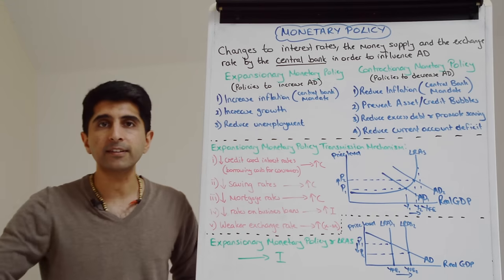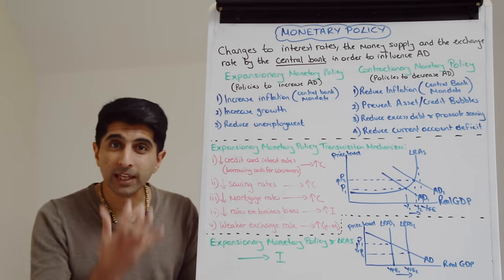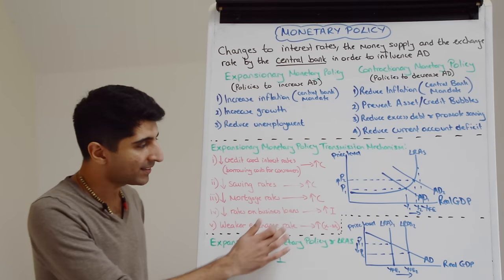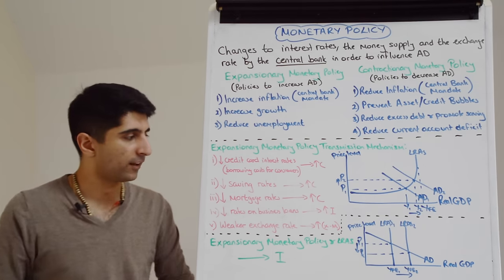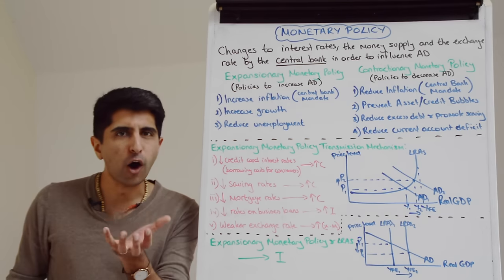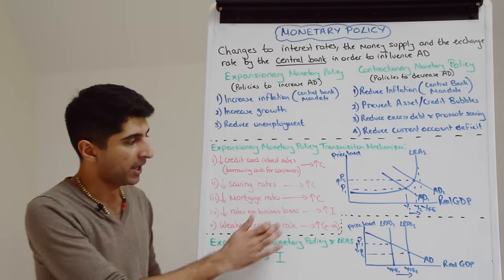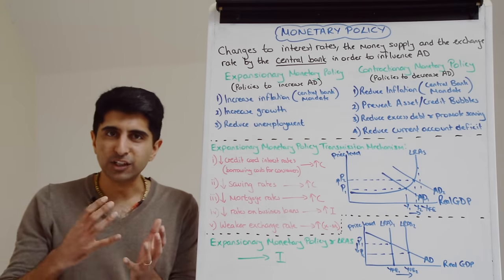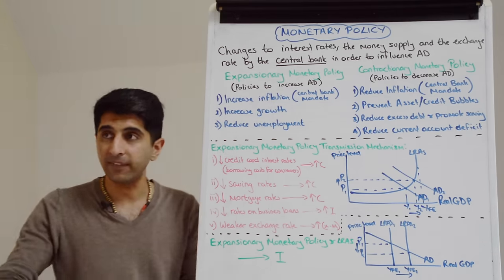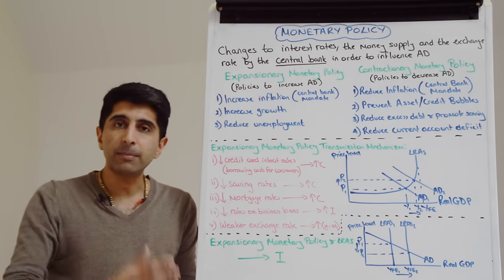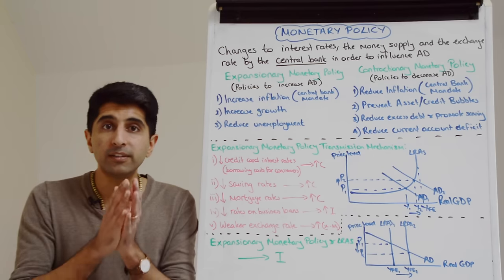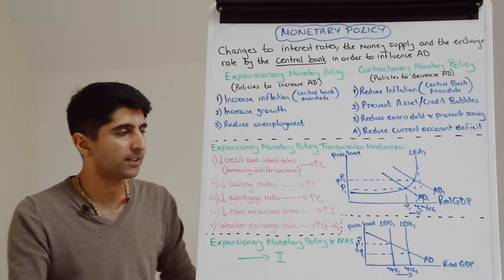Lower interest rates across the economy can also weaken the exchange rate. That's because savers have less of an incentive to save in this country if interest rates are lower, and therefore they'll look to move their money out of the country. That's known as hot money outflows — hot money is savings that chase the best interest rate. So if interest rates are relatively lower in one economy and higher elsewhere, people with savings will move their money out of the country, leading to an increase in the supply of the currency and depreciating it.